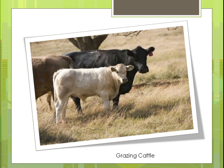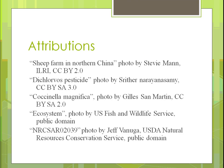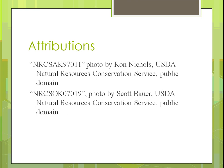Here's an example of grazing cattle in a pasture with a tree in the middle. Eventually they might return that to a farm field for a few years, then move the pasture to where the farm field is now. The biggest challenge is finding the right mixture of plants and animals. That proves challenging, but it's the experiment we need to do — finding the right combination, sharing information with others, and determining when the right time is to introduce a disturbance that will create a productive agroecosystem.